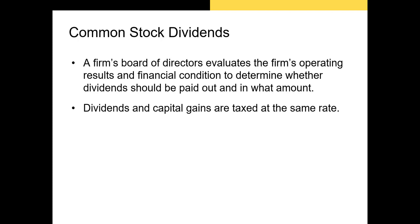Dividends are currently taxed at the same rate as realized capital gains, meaning that as an investor receiving a dividend, you should be indifferent between the dividend and a comparable increase in the value of your stock. This hasn't always been the case. Changes to dividend and capital gains tax rates have been shown to affect firms' decisions to issue dividends. It's better to issue dividends when the dividend tax rate is lower than the capital gains rate; when it's higher, it's better for investors that the firm reinvest net income to increase share price.